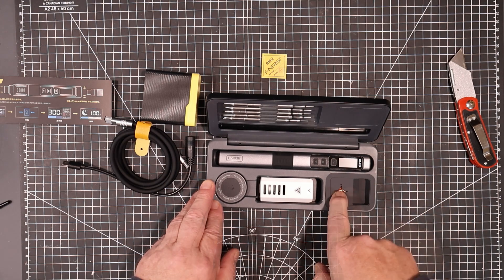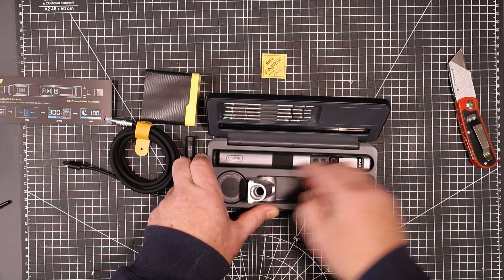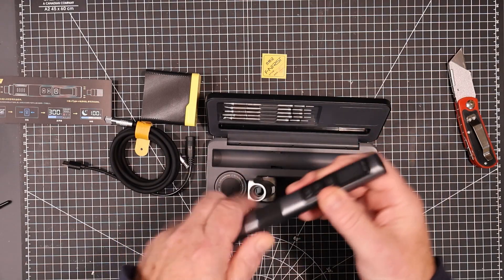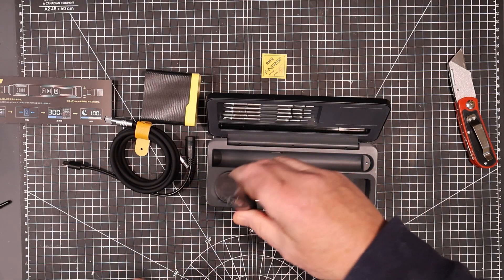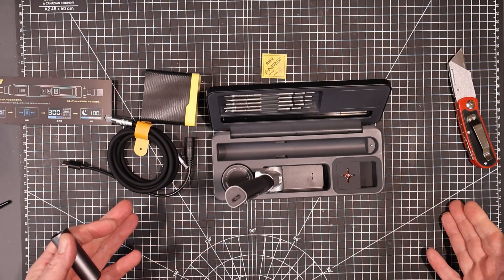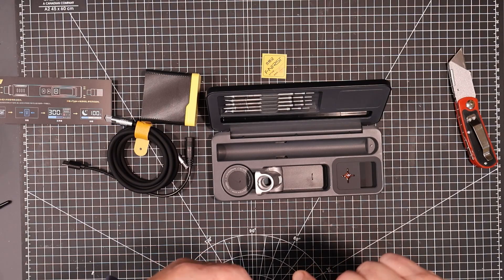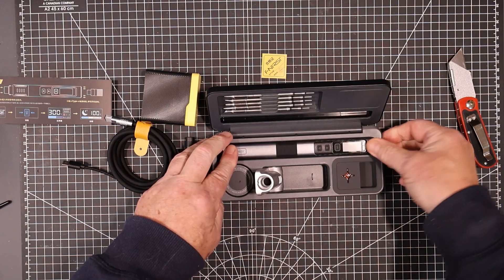It comes with a little copper cleaner here and a stand right here. So you can put your soldering iron right in the stand and use it from there. So a nice portable soldering station right here. We'll have to do a video on reviewing this and comparing it to the HS01.